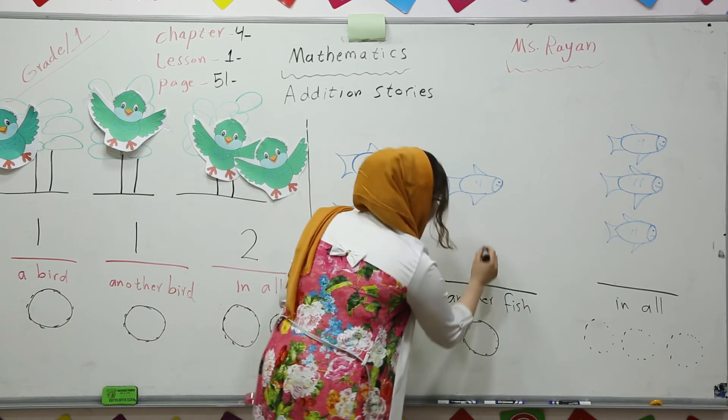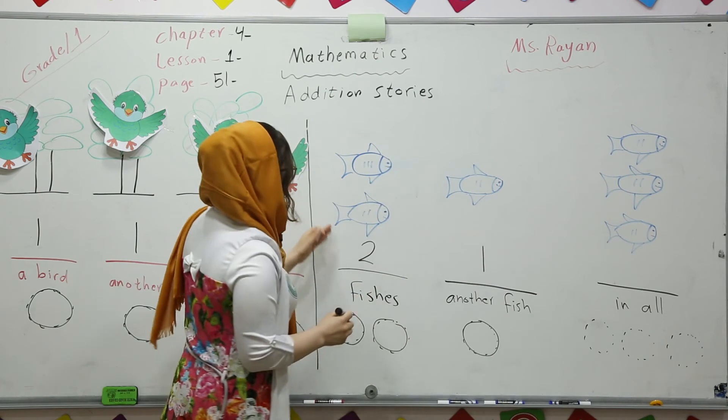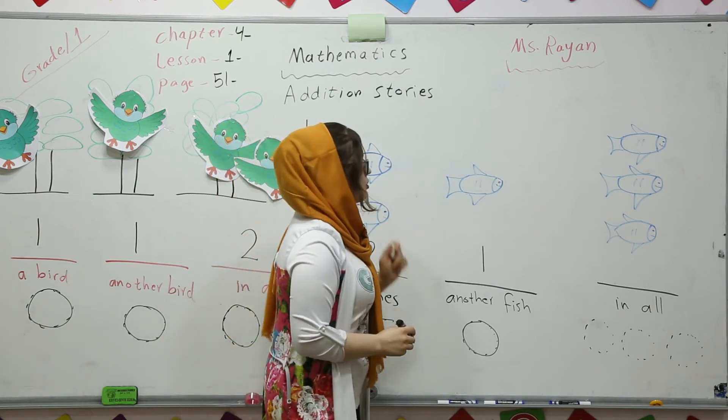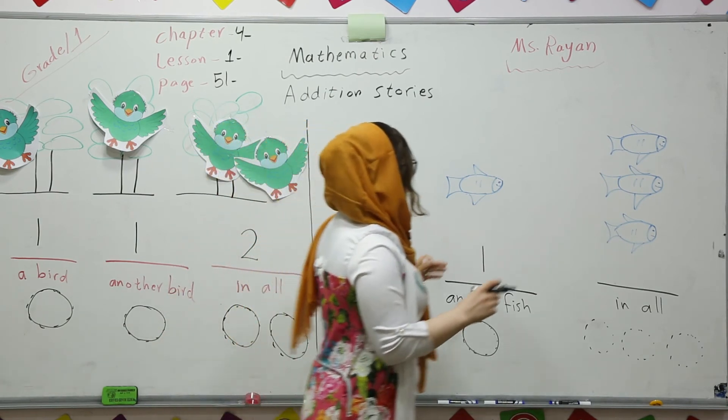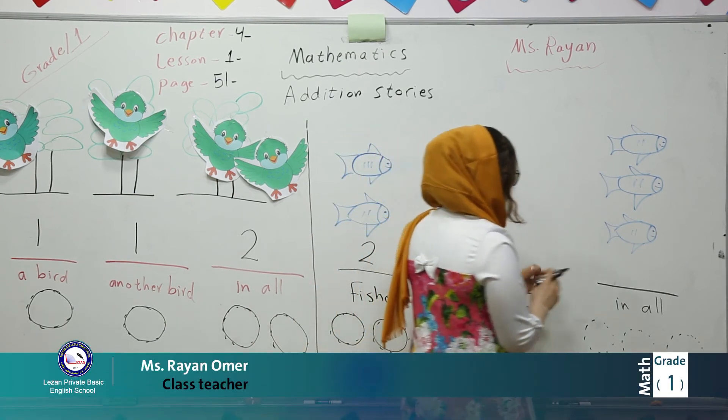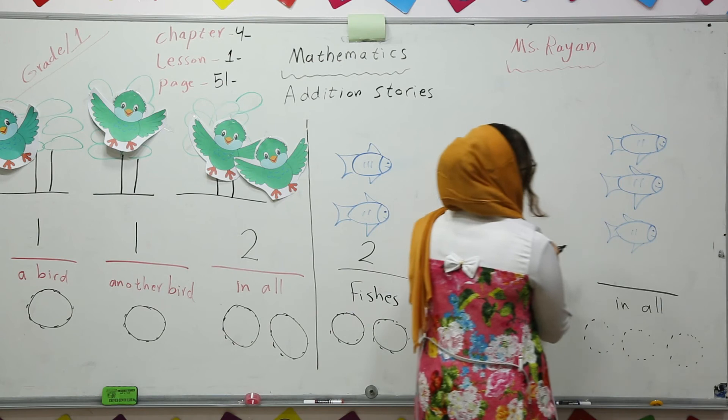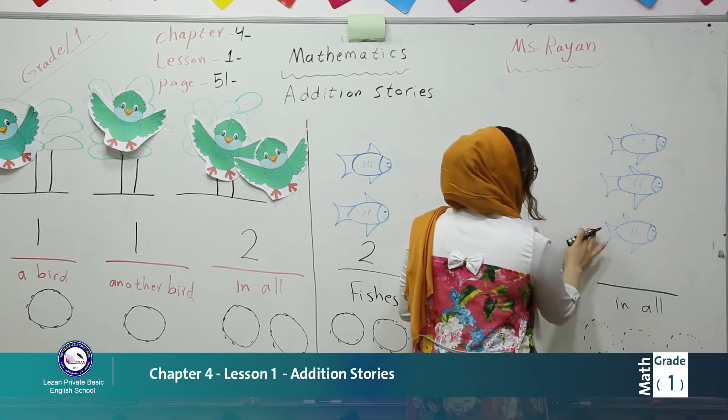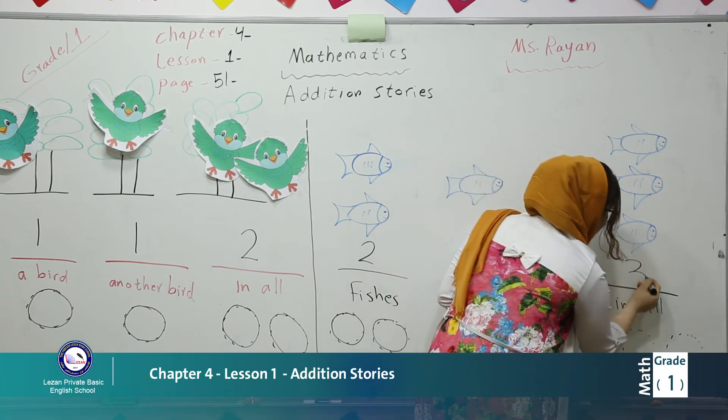Here two fishes and one fish. So when they came close to each other, when we collected in all, they became what? One, two, three, three fishes.